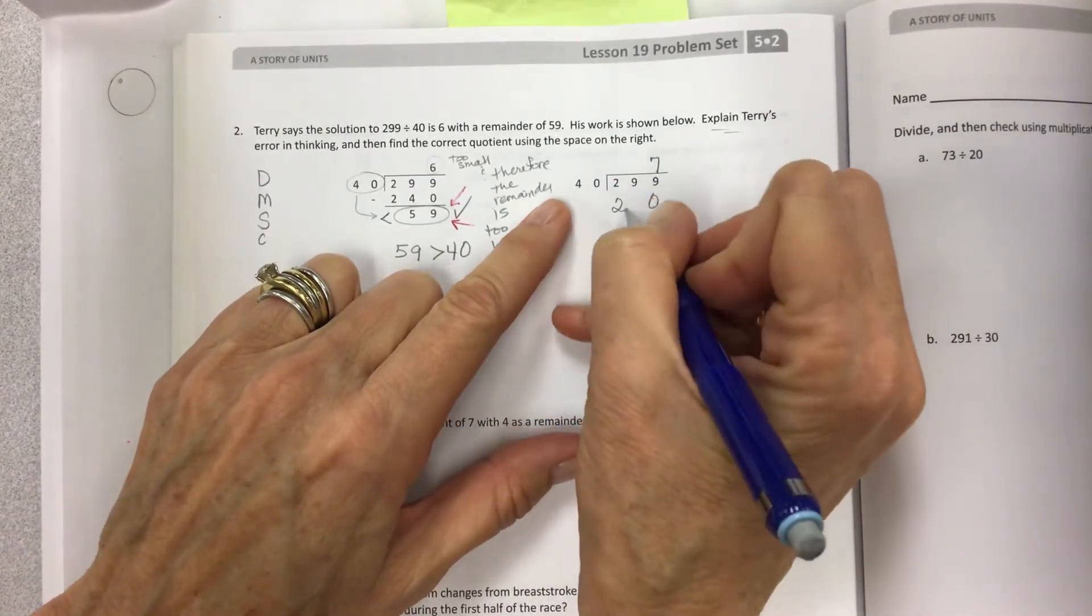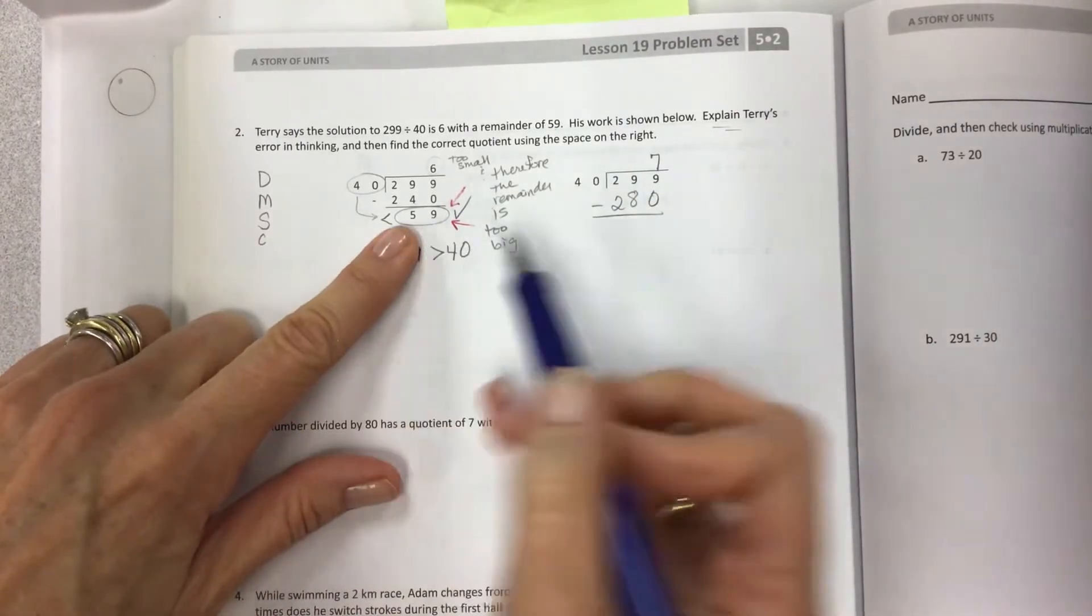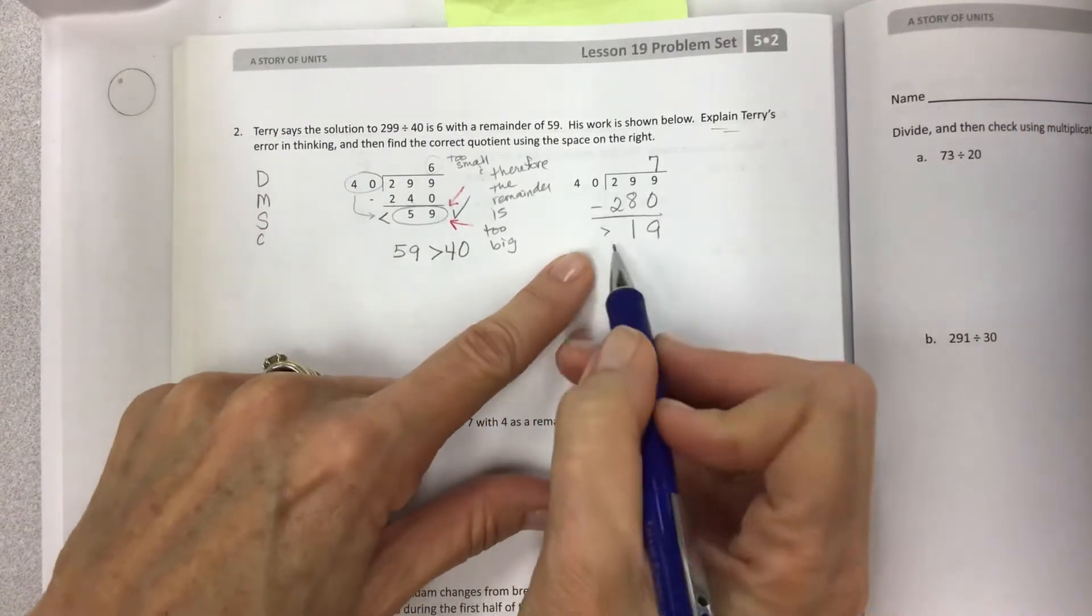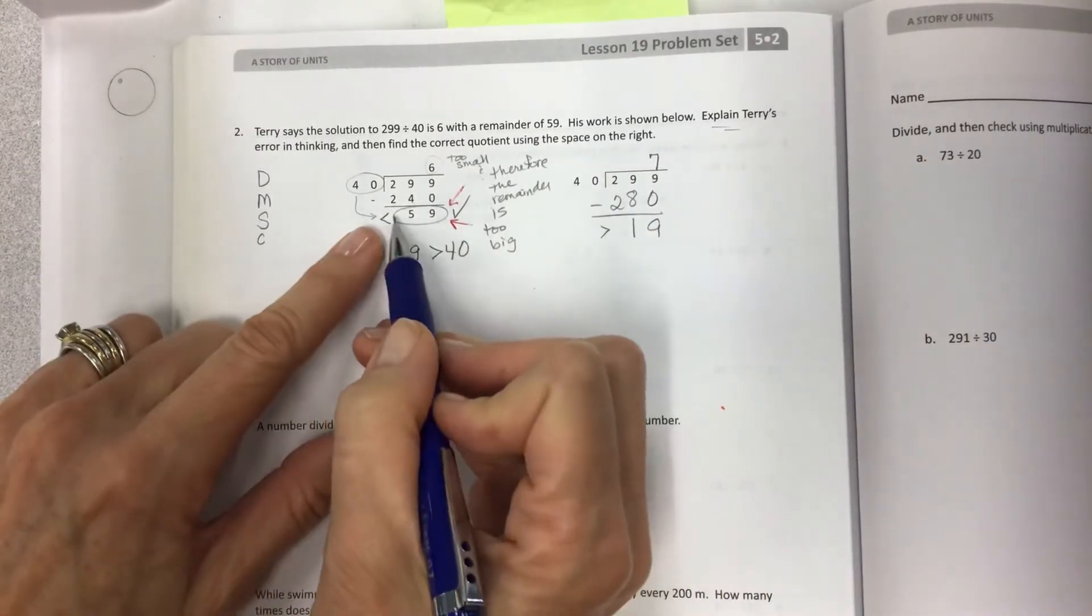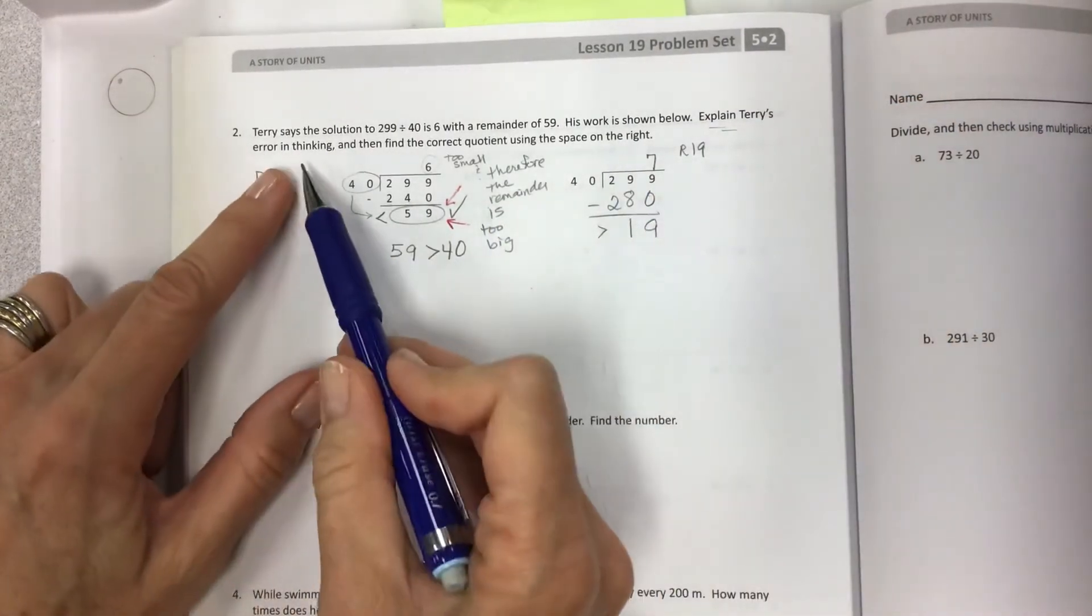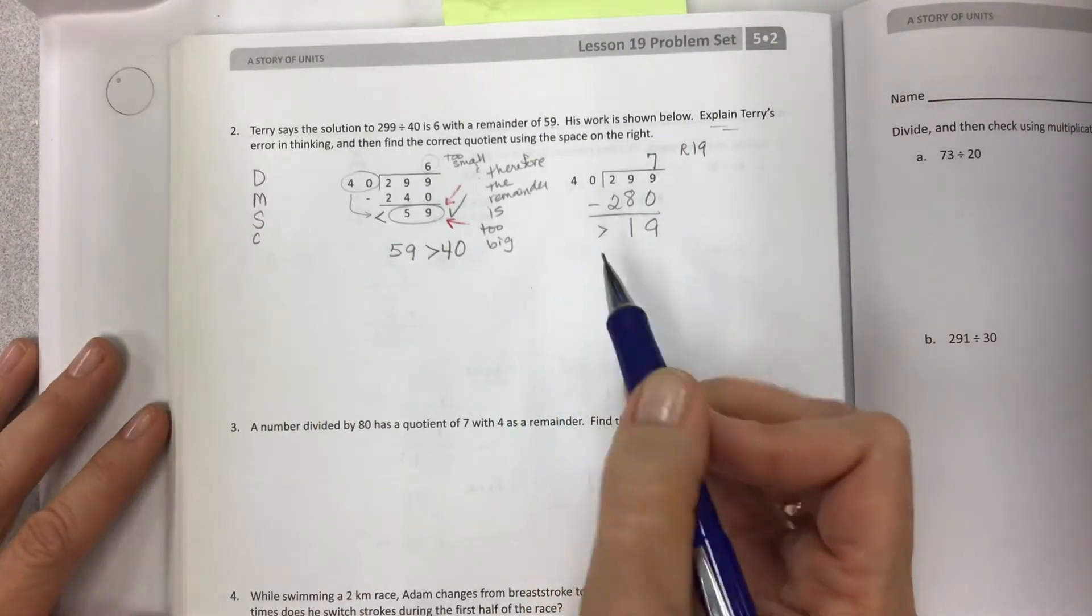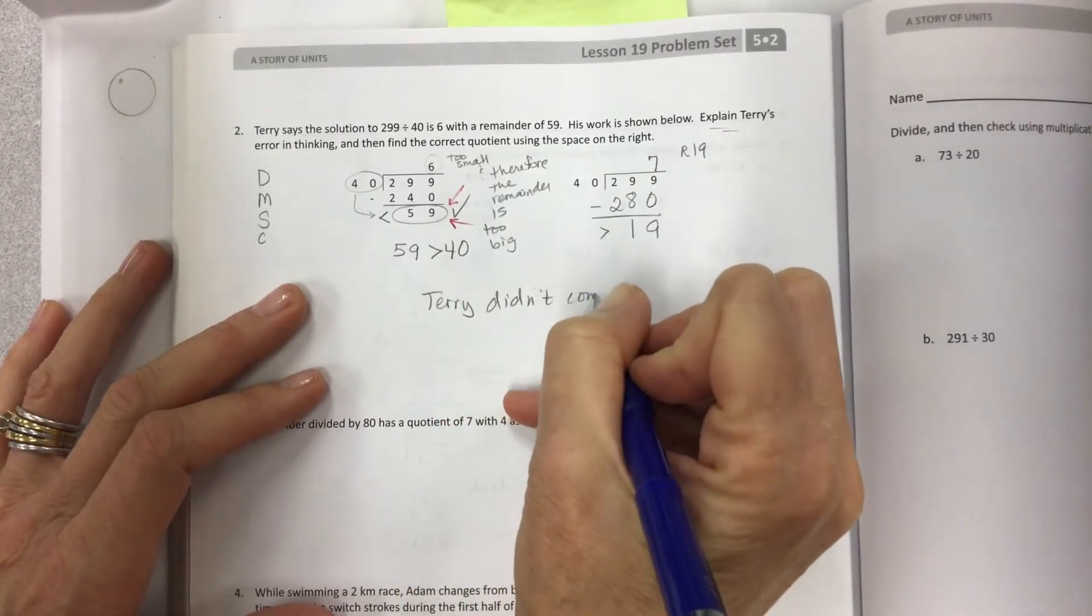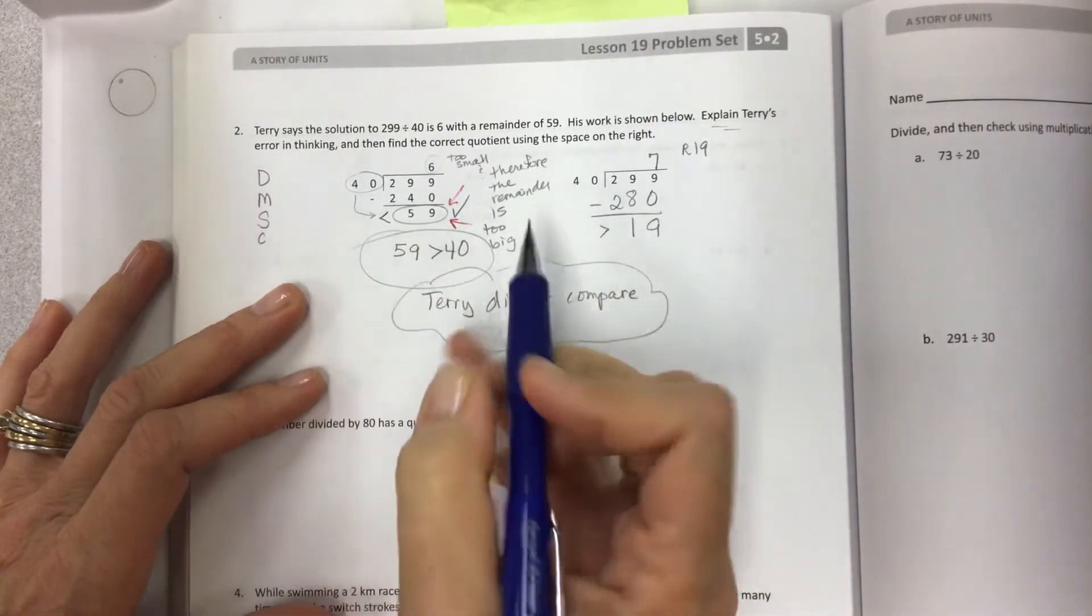So I would bump this up to a 7. And then we can try again. 7 times 0 is 0. 7 times 4 is 28. Look, we're still less than 299. But I hope we're a lot closer than 59. 9 minus 0 is 9. 9 minus 8 is 1. And oh look, now when I compare again, look at this sign. I need 19 to be less than 40. This one was the opposite. It was greater than. But this one is less. R19. So we explained Terry's error in thinking. And we found the correct quotient. So this one is all finished. So Terry didn't compare. And that's basically the long and short of it.